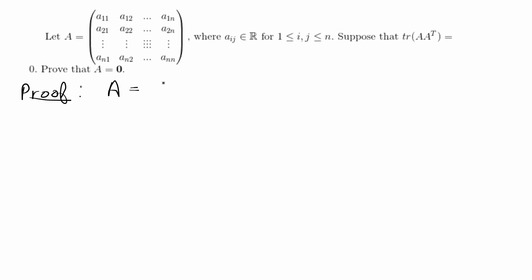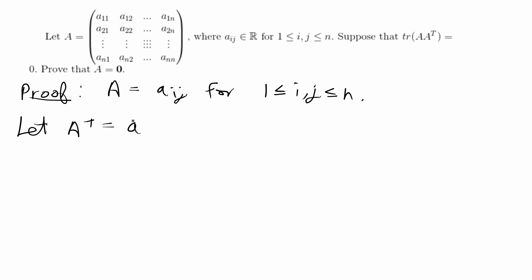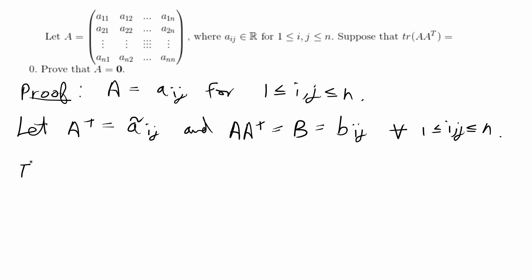We are given that A is basically A_ij for any i, j between 1 and n. Then we can write A transpose as Ã_ij, and A times A transpose as B = B_ij for any i, j between 1 and n. By the definition of transpose, Ã_ij will always be equal to A_ji, because that's just what transpose means.